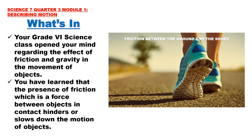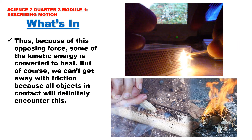What's In: Your Grade 6 Science class opened your mind regarding the effect of friction and gravity in the movement of objects. You have learned that friction, which is a force between objects in contact, hinders or slows down the motion of objects. Friction between the ground and the shoes is one example — we are able to walk without slipping because there is a force between the ground and your shoes. If there is no friction, we won't be able to keep walking or running on the ground. Because of this opposing force, some of the kinetic energy is converted to heat — one of the products of friction.